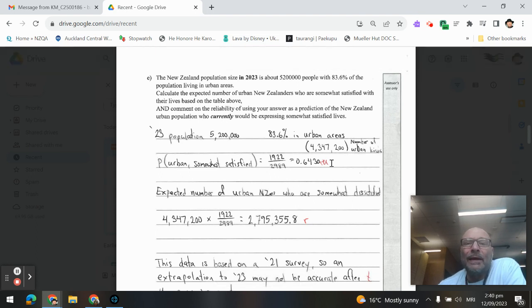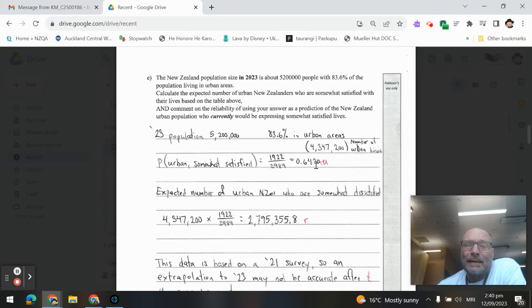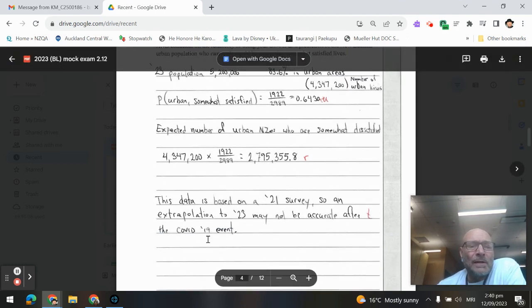Now, finding the expected number, we take this probability and times it by the number of people, giving us 2,795,355.8. You're welcome to round that to a whole number.